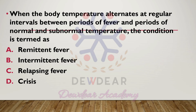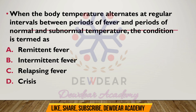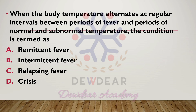When the body temperature alternates at regular intervals between periods of fever and periods of normal and subnormal temperature, the condition is termed: remittent fever, intermittent fever, relapsing fever, or crisis. The correct answer is option B — intermittent fever.